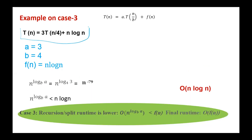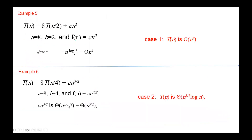Here we have an example on Case 3. With a = 3, b = 4, and f(n) = n log n, the recursion split function is n^(log_4(3)) = n^0.75. Since n^0.75 is less than n log n, we have Case 3, and the complexity equals f(n). For another example with a = 8, b = 2, and f(n) = cn², the recursion split function is n^(log_2(8)) = n³. So the complexity is O(n³).